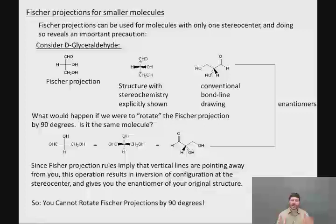Luckily, if we are just using Fischer projections for the 6-carbon sugars, there's not going to be a strong temptation to rotate them 90 degrees in this unit. Although we are going to come back to using Fischer projections when we talk about amino acids, and since they have only one stereocenter, we do have to watch out for this. So that's Fischer projections in a nutshell. In the next video, as promised, we will come back and look in more detail at what D and L mean.